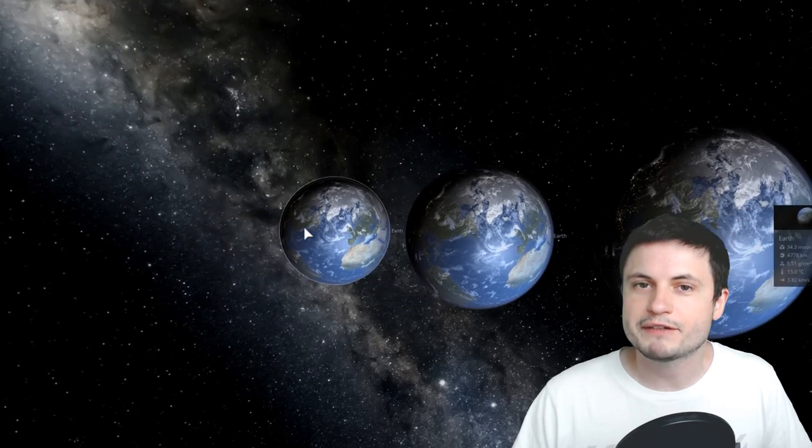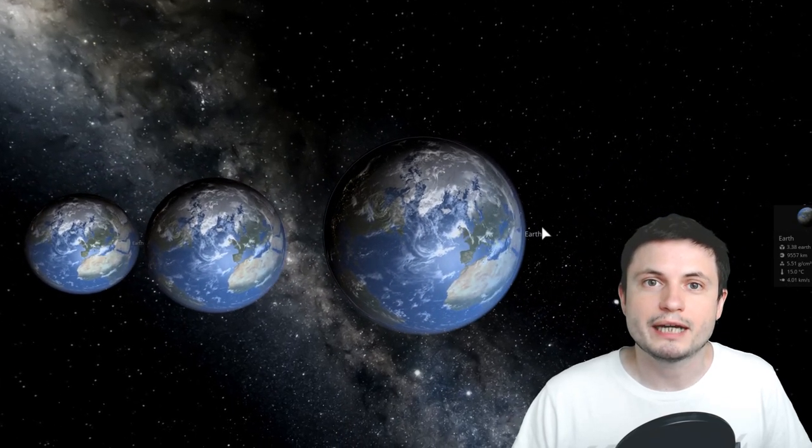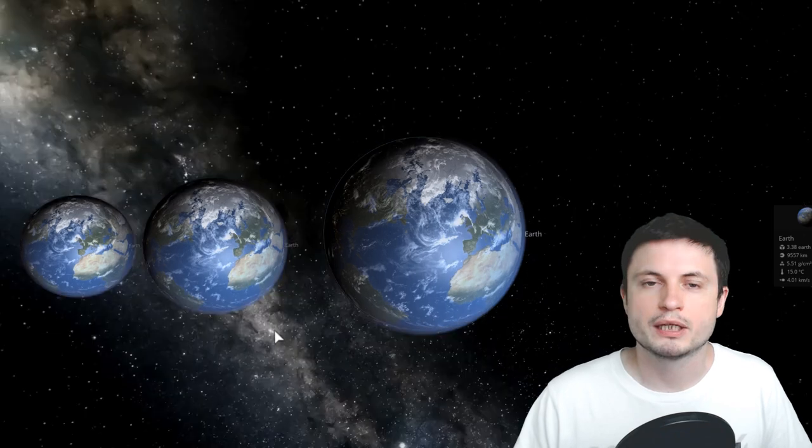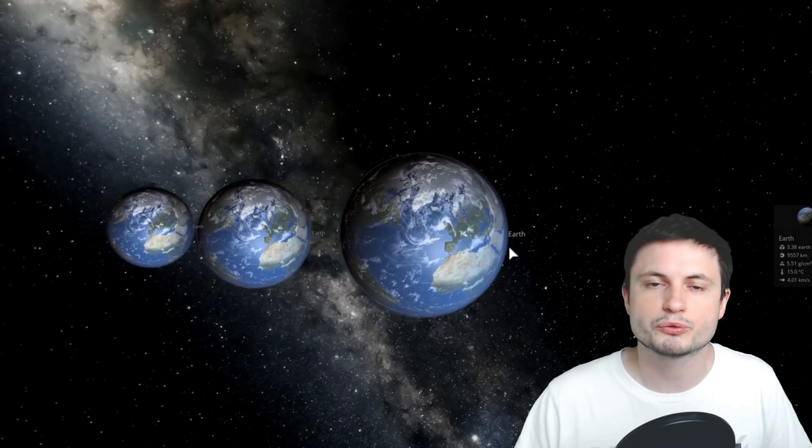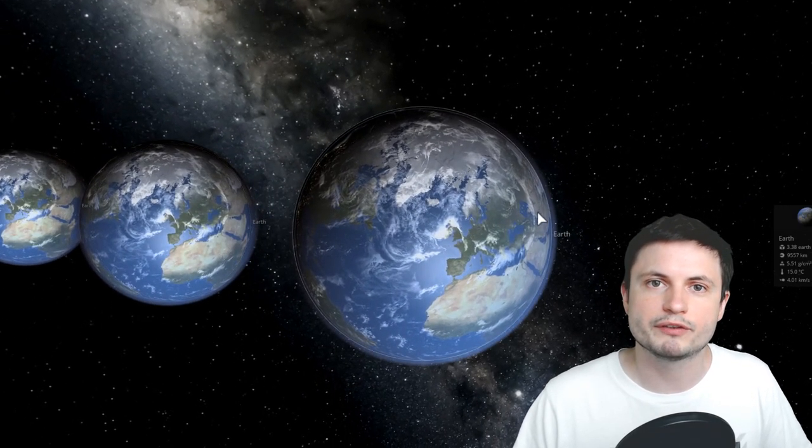But for this paper, the scientists decided to take a very broad approach and define the Earth-like size as something in between approximately 75% the size of Earth, which is this right here, and this is the actual Earth, and then approximately 150% the size of Earth. So they looked at planets of this size, anywhere between this small to this large, because we assume that you could still have relatively similar conditions to Earth even if the planet is this big.